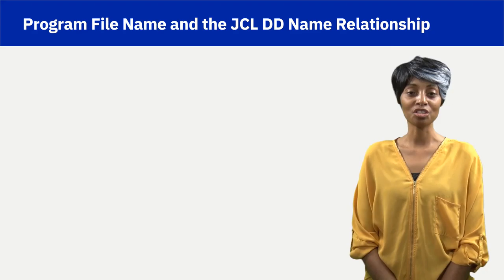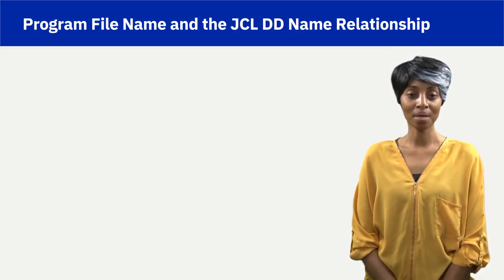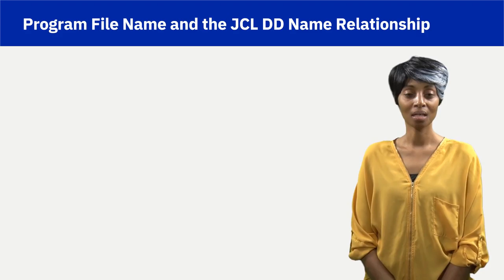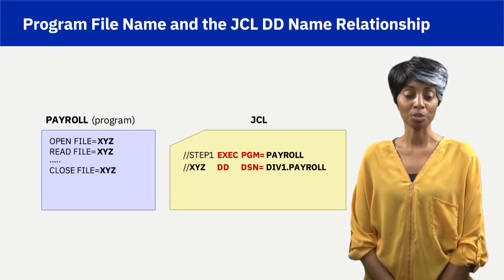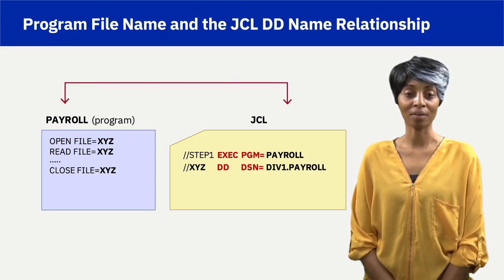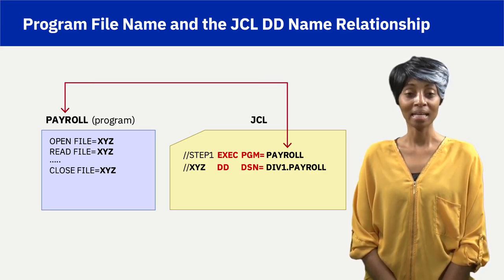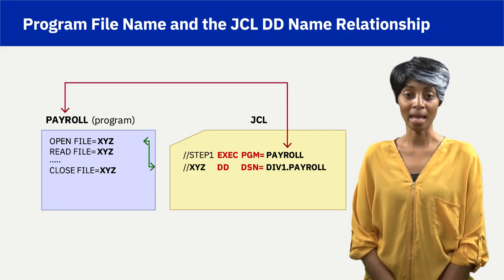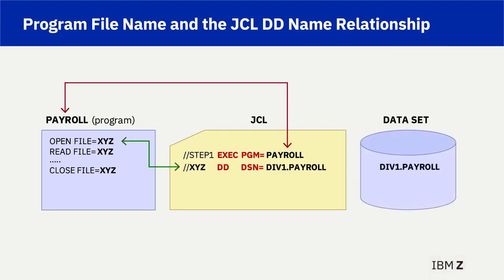JCL is used to connect a program file name to a ZOS physical resource such as a dataset name, UNIX file name, JSPOOL, printer, network device, and so on. The example shows ExecPGM equals payroll, resulting in the program having access to file XYZ. The DD statement, DSN equals div1.payroll, points to the XYZ resource in storage and allows the content to be read by the program. DD is the abbreviation for data definition; XYZ in this example is a program file name and is also known as the JCL DD name or dataset name.